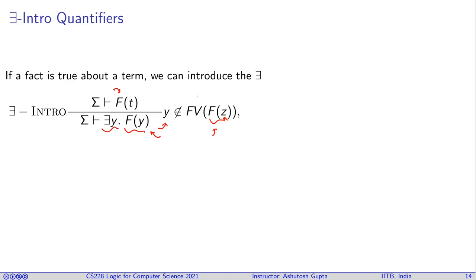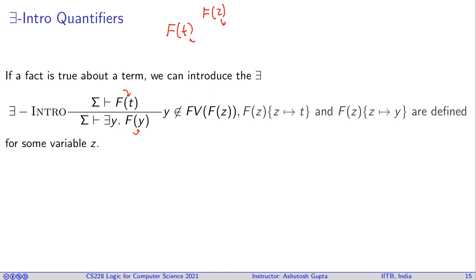Important thing to note is there are two more side conditions here, often not explicitly written. What are those side conditions? Since you have done two substitutions in this proof rule. So, when you wrote F(t), it means there was an implicit formula F(z), maybe for some z, such that you took z out and put the t in. And similarly, when you wrote F(y), you took on the same formula, took z out and substituted by F(y).